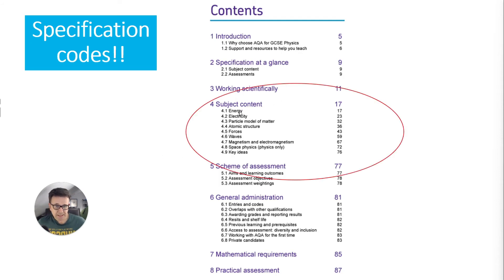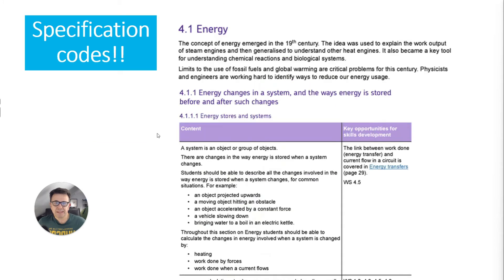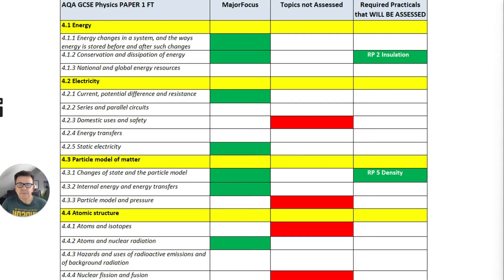So here's the subject content — all the physics items — and you can see they've given it a number. That number is the spec code, so for example 4.1 energy, and then you've got it into a subunit of 4.1.1 and then other subunits within energy changes. As you can see there is a big focus on energy, particle models of matter and also a bit on electricity as well.